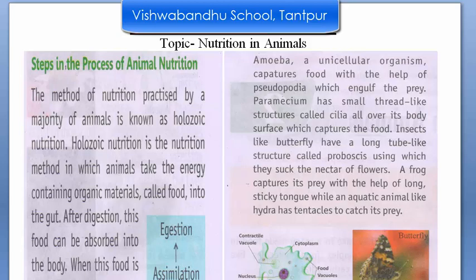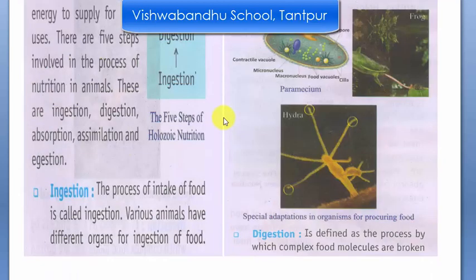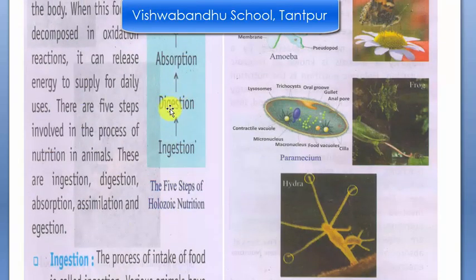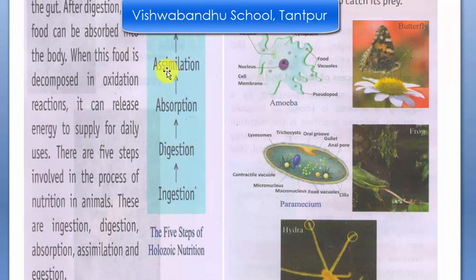So before learning this, we will recall all the things we have studied. The process of nutrition in animals takes place in 5 different steps. These 5 steps are for the nutrition-taking process — we are talking about the 5 steps of holozoic nutrition. First is ingestion, second is digestion, third is absorption, fourth is assimilation, and the last is egestion.